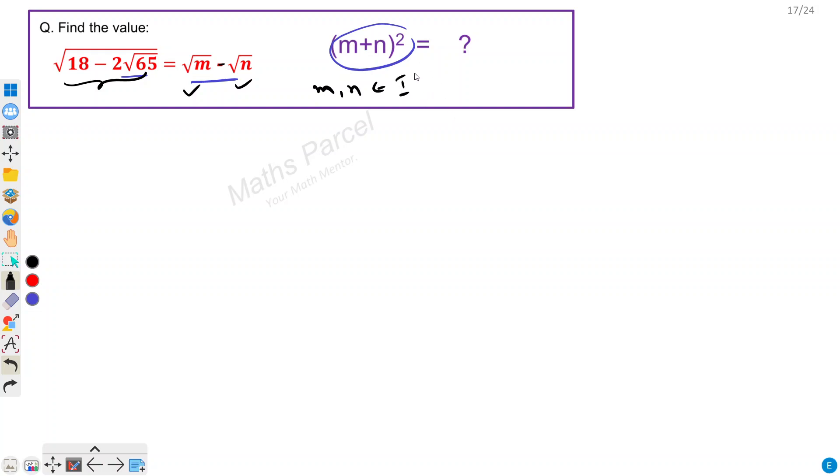And obviously these integers would be positive integers. Okay, so we have to simplify this square root of 18 minus 2 square root of 65.